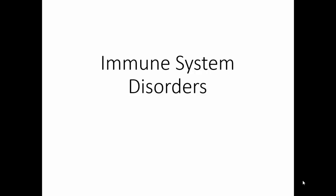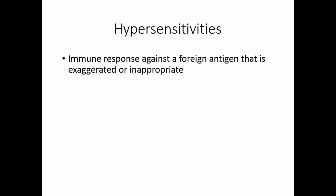Your immune system should protect you from disease, but occasionally it does not do this. One condition you can have that's a disorder of the immune system is hypersensitivity. This is an immune response against a foreign antigen. The response is either exaggerated or it's inappropriate. There are four types of hypersensitivity.